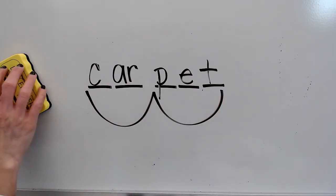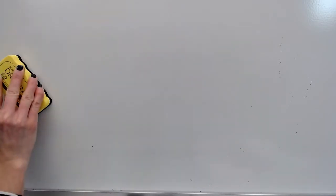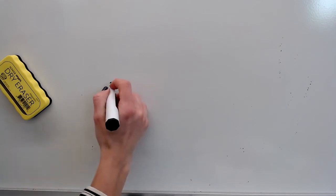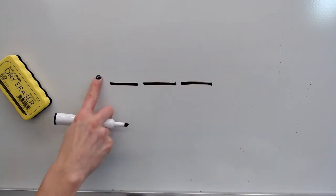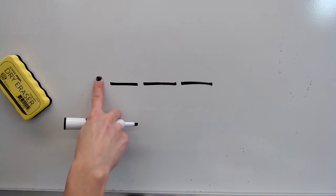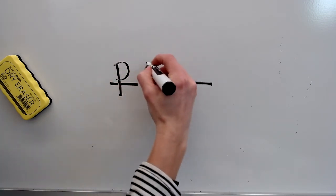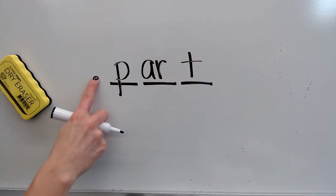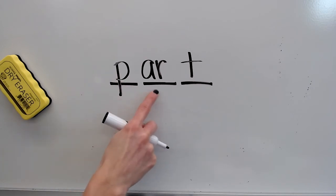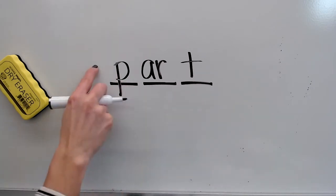If you got that one correct, give yourself a pat on the back. All right, we got the hard ones out of the way. Let's keep going. Your next word is part. What word? Part. Stretch the sounds you hear in part: P-A-R-T. Write your sound spellings for part. Check your word. Spell part: P-A-R-T. Word — part. Yes, part.